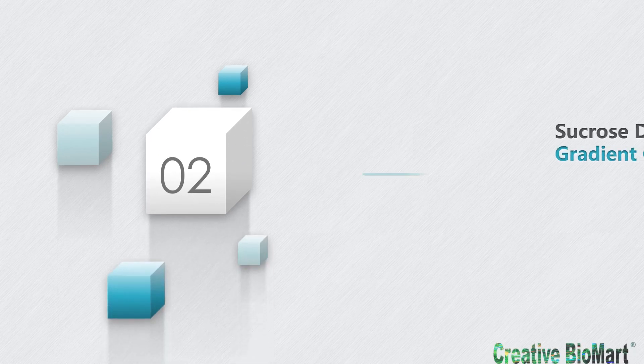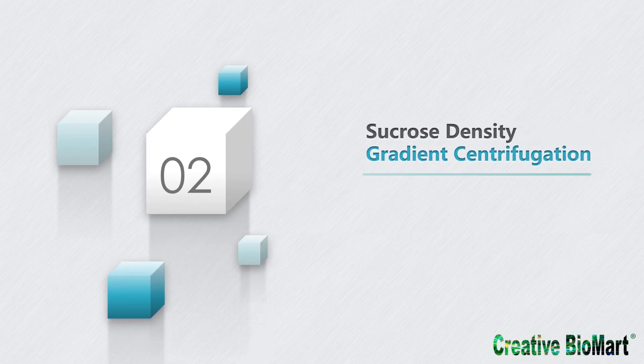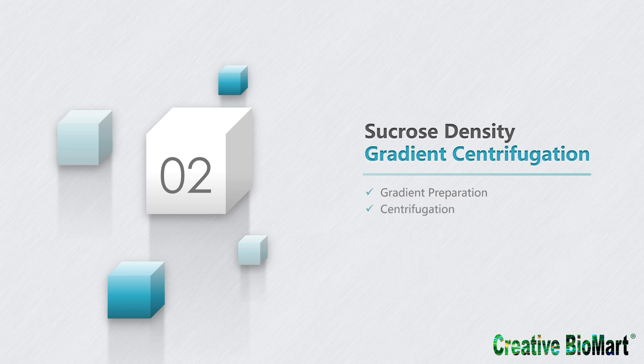Next, we will move on to the introduction of the operation process of sucrose density gradient centrifugation. Sucrose is a solution commonly used in density gradient centrifugation. This method mainly includes the following steps: gradient preparation, centrifugation, separation, and elution.